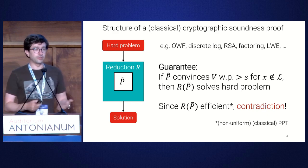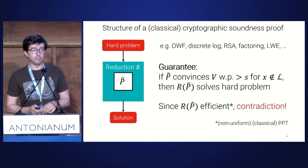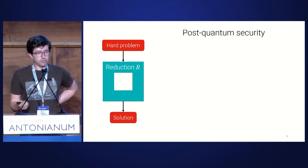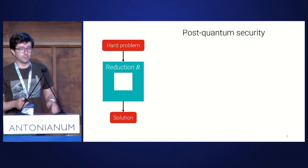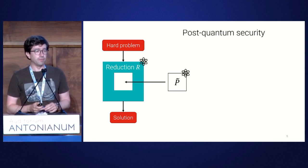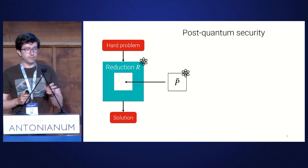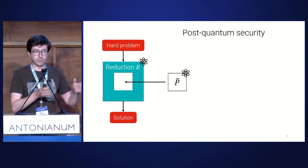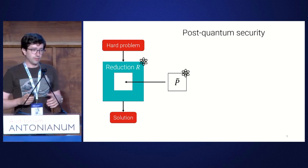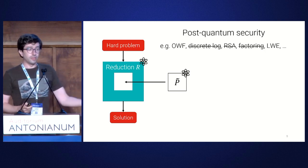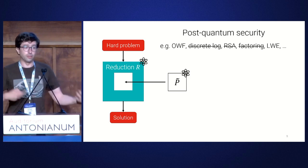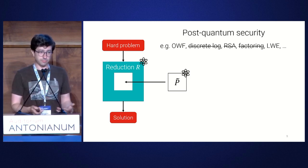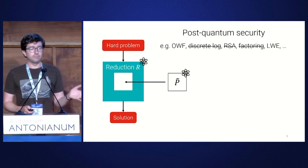By 'efficient' in the classical setting, we usually mean some sort of non-uniform classical polynomial time. In the quantum setting, there are two key problems. First, we have a quantum prover, so when we plug it into the reduction, the reduction itself is going to be quantum. This means the hard problem needs to be hard for quantum algorithms — so we have to cross out assumptions broken by Shor's algorithm. But we still have things like post-quantum one-way functions and LWE.